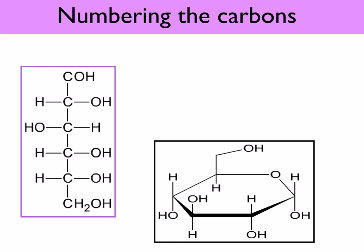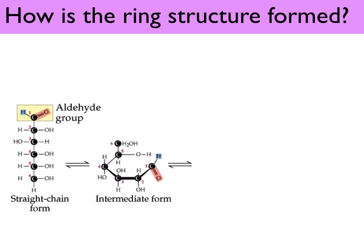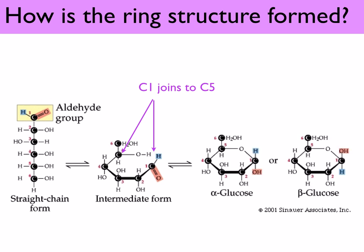In the simplified diagram, carbon 1 is on the right, going one, two, three, four, five, six. The ring structure is formed when the straight chain curls around — carbon 1 joins to carbon 5 and they share an oxygen, forming a more stable ring. Notice how one point of the hexagon is the oxygen. The result is alpha glucose and beta glucose.